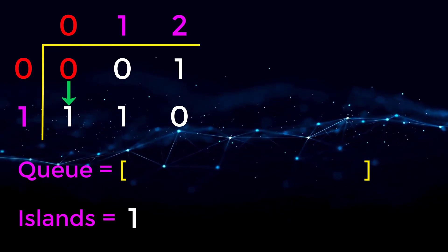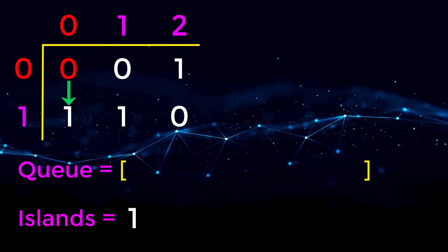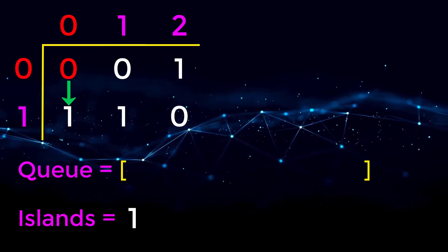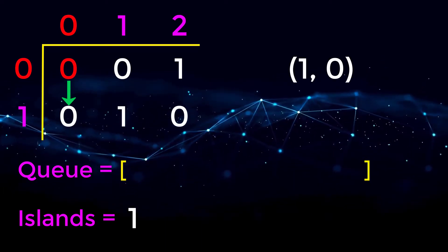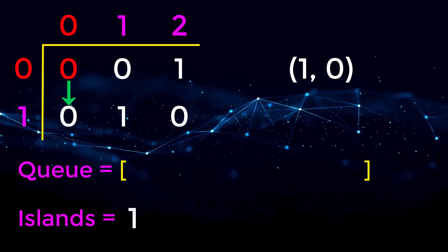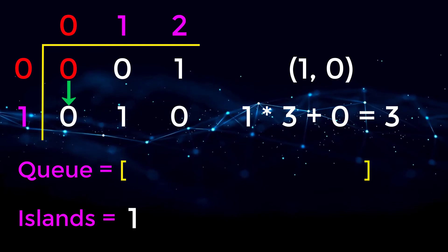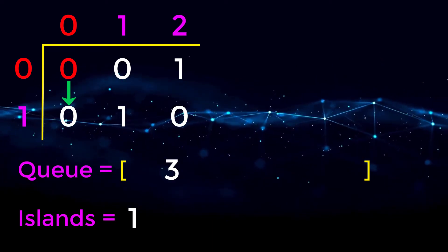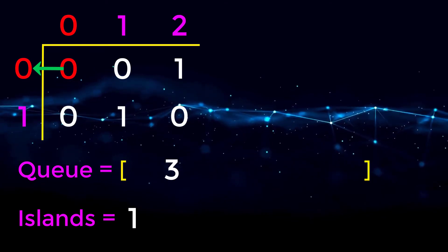We only care about land. To the right of zero zero is zero, which is water, so we ignore it. Below us at position one zero we encounter a one — two pieces of land attached together. We change that land to water then add position one zero to our queue. Converting to a 1D integer: one times three plus zero equals three. So we add three to our queue. To the left of us is out of bounds, so we ignore it.